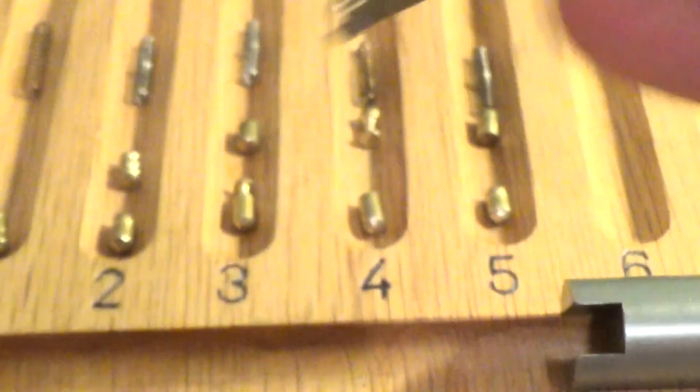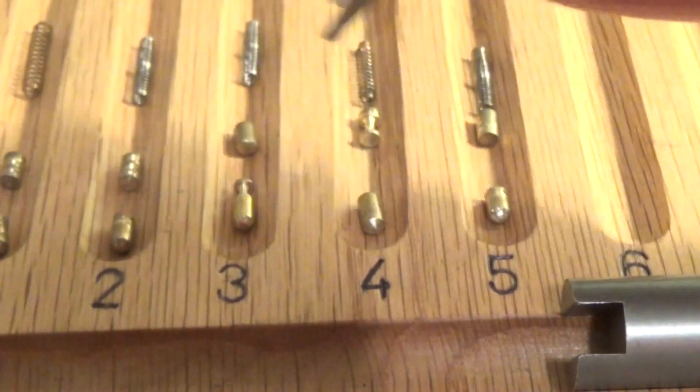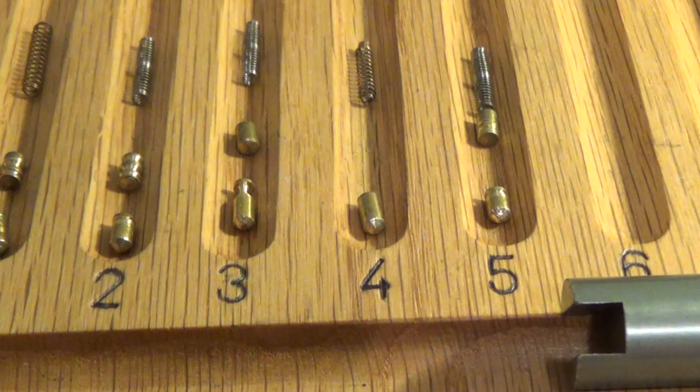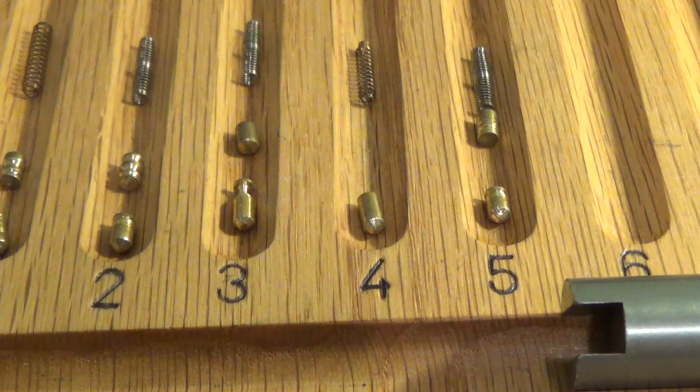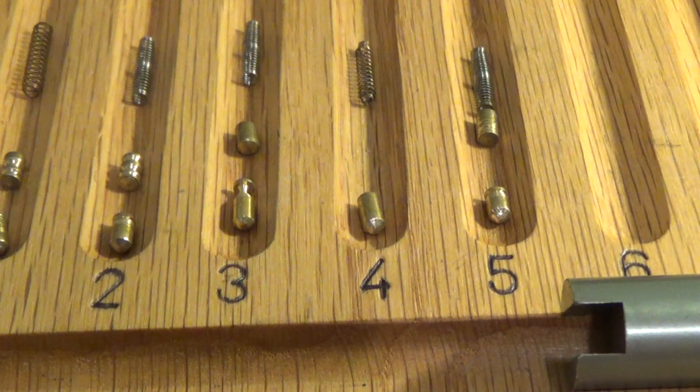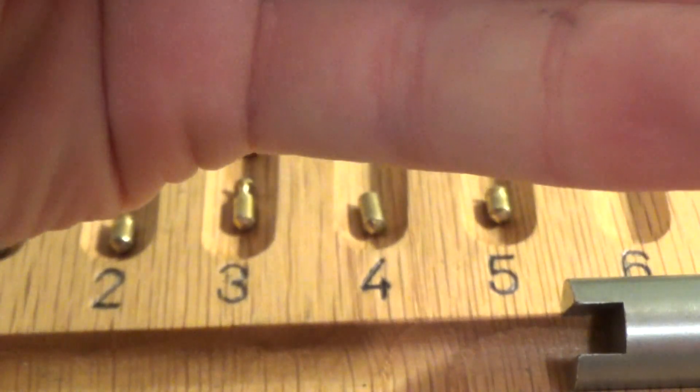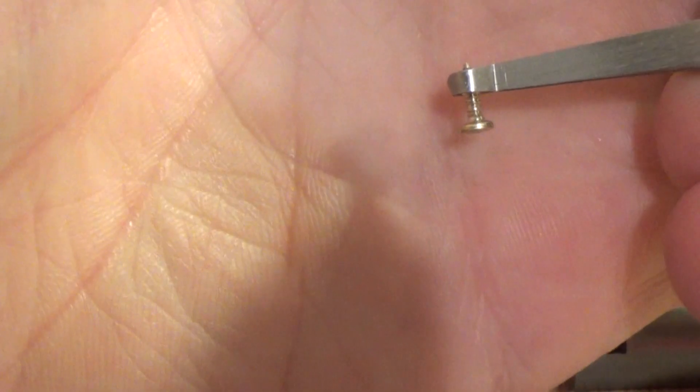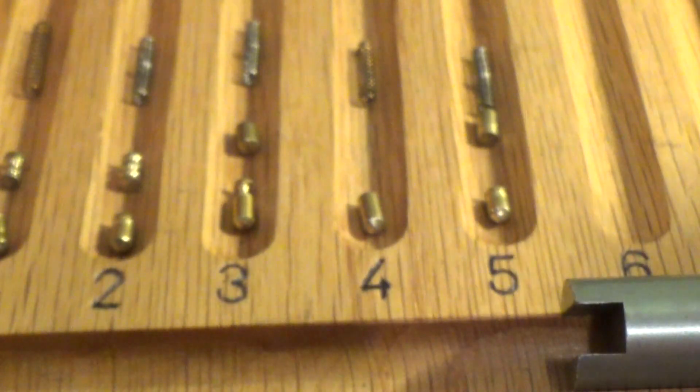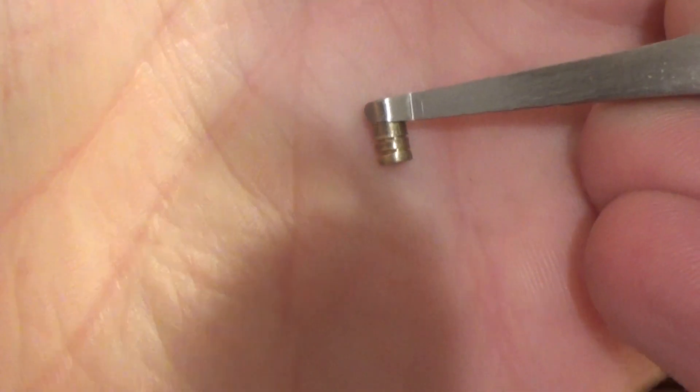You have serrated in one, beautiful serrated in two, normal in three. We have a fighter in four. Very, very, very thin waist on this one. So that explains that very, very deep false set. That and the counter milling, that's why you had such a deep false set. And five, serrated.